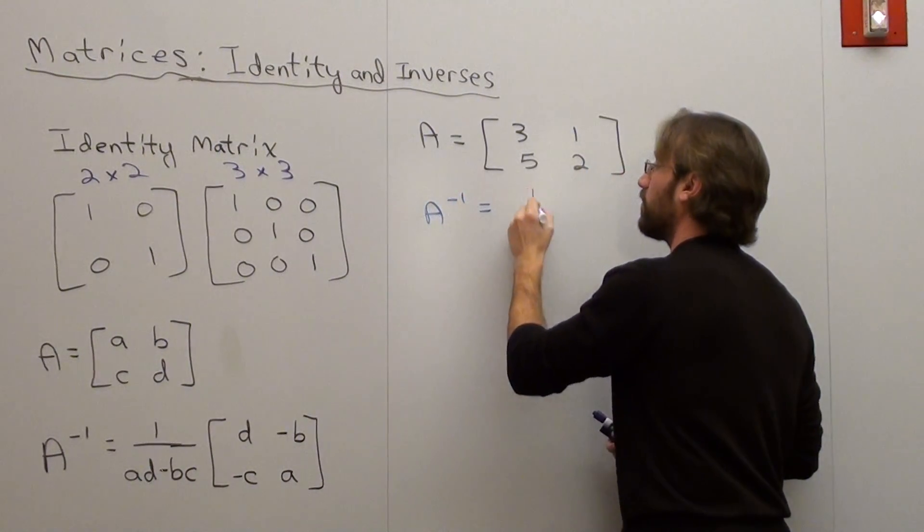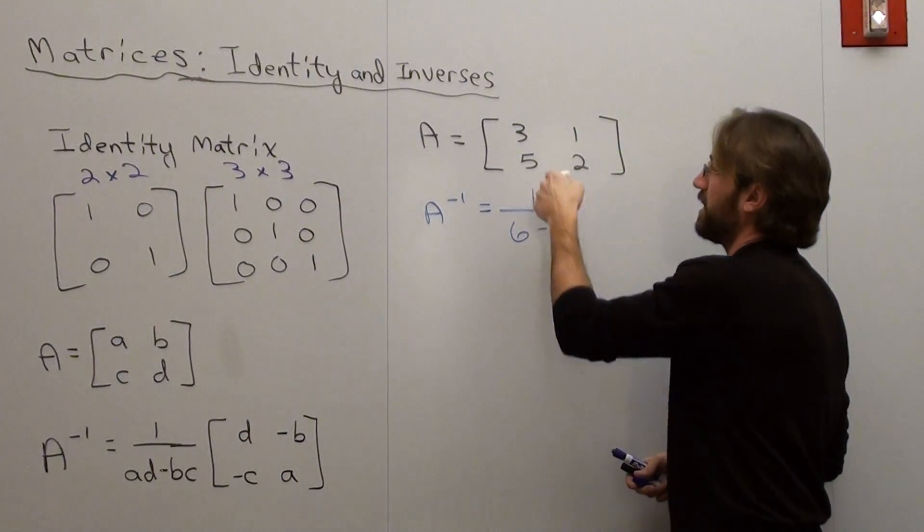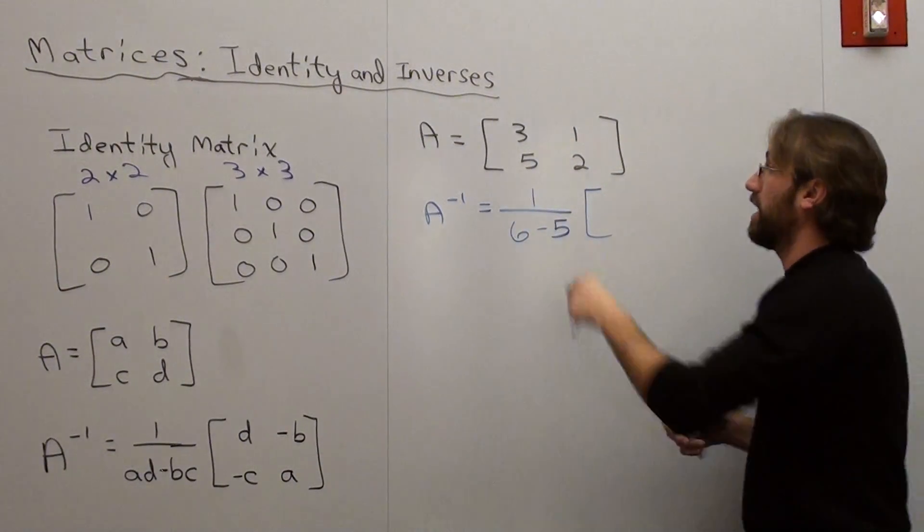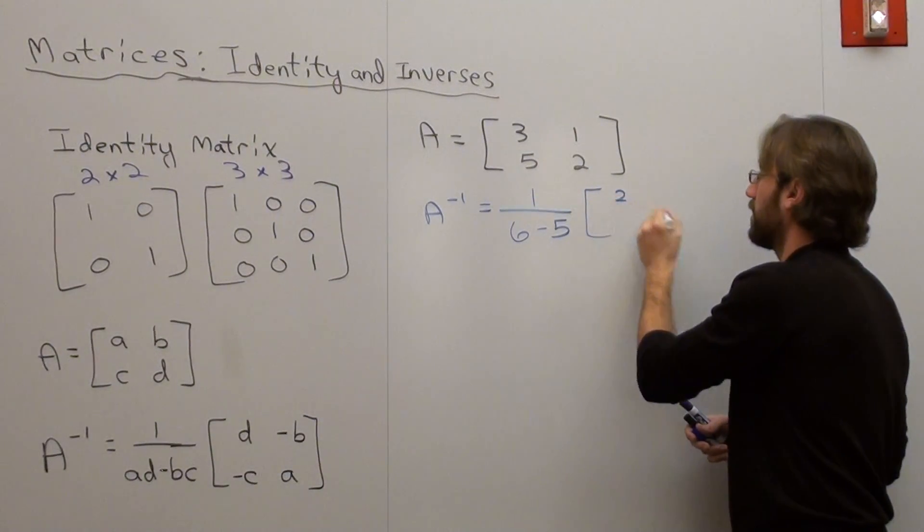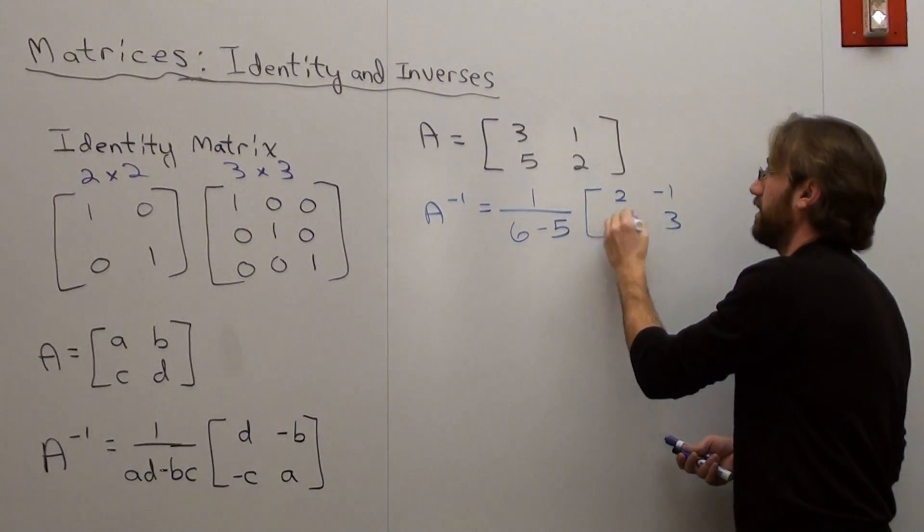The inverse of this matrix is equal to 1 over 3 times 2, which is 6, minus 5 times 1, which is 5. And then you flip the terms. You switch the A and the D, so it's 2 and 3. And then these just become opposite signs, which is negative 1, negative 5.